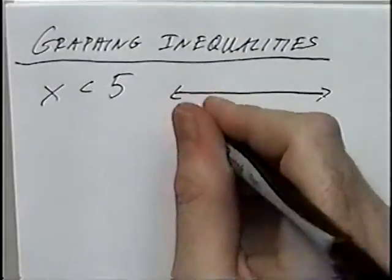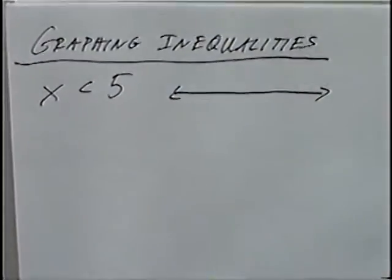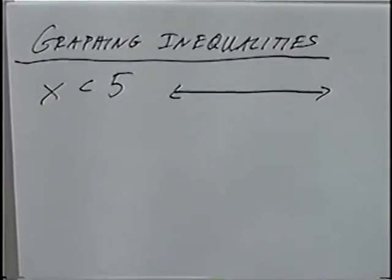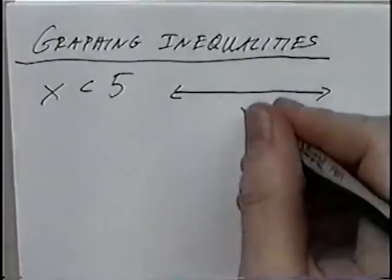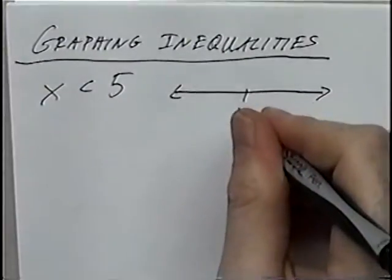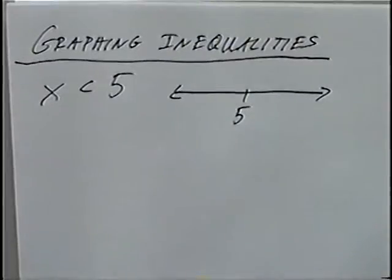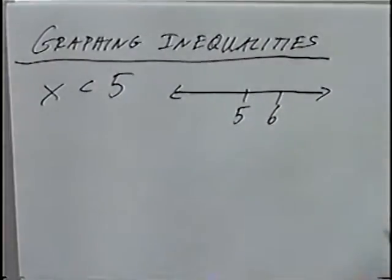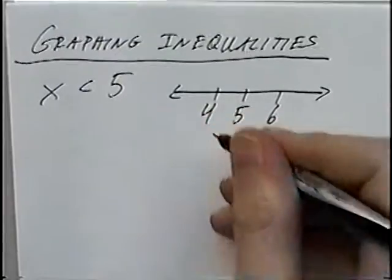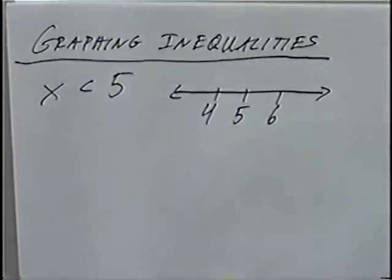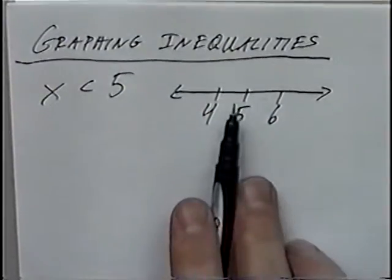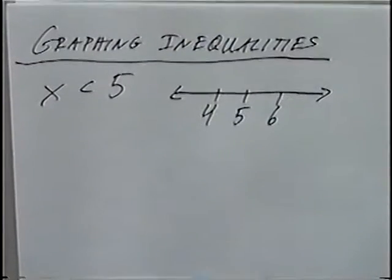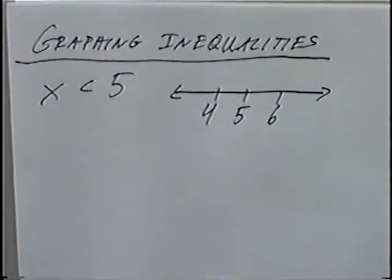There are several ways to draw a number line. One possible way is to put the answer, 5, in the middle of the number line, with one number to the right which is 6 and one number to the left which is 4. If you want, you could start your number line at 0 and count up to 5, or have several different numbers on there.